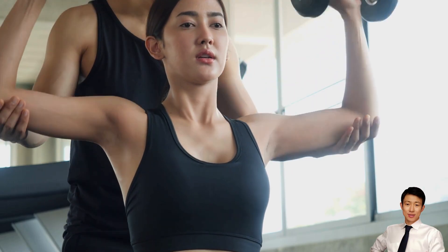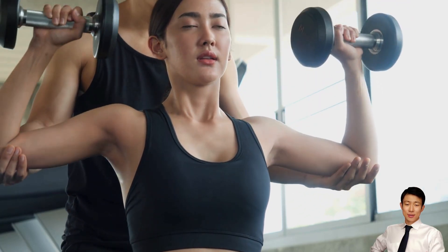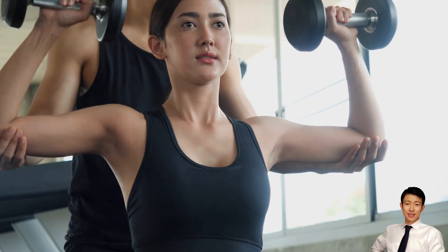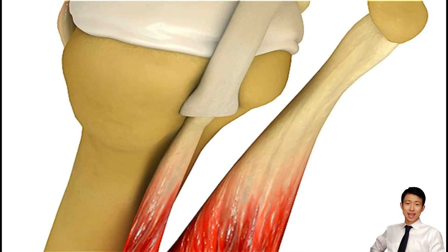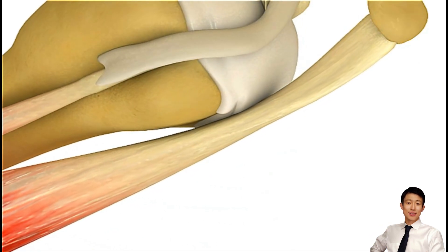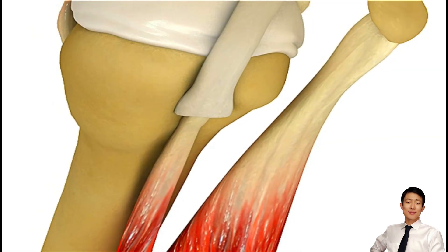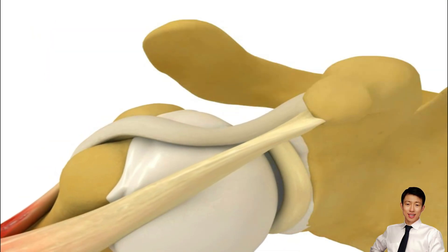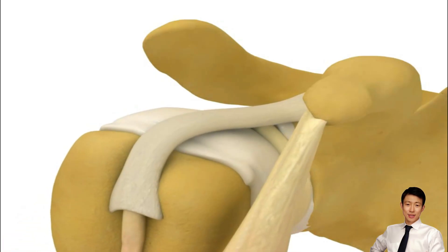Common causes of rotator cuff or biceps long head injuries include overuse, trauma, degeneration with aging, or overhead activities. The long head of the biceps tendon, anchored at the supraglenoid tubercle or labrum, plays a stabilizing role. The pulley system, formed by the coracohumeral and superior glenohumeral ligaments, protects against anterior instability.